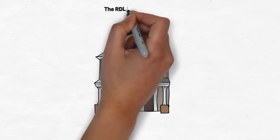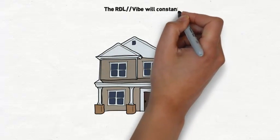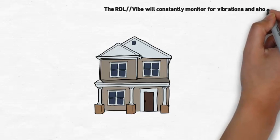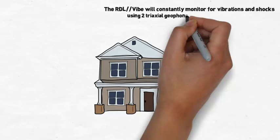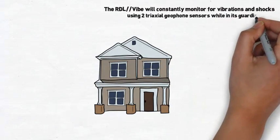The RDL Vibe will constantly monitor for vibrations and shocks, using two tri-axial geophone sensors while it is in its guardian mode.